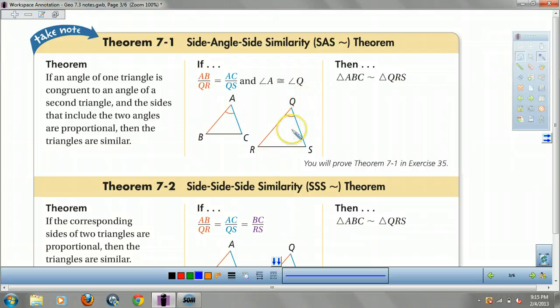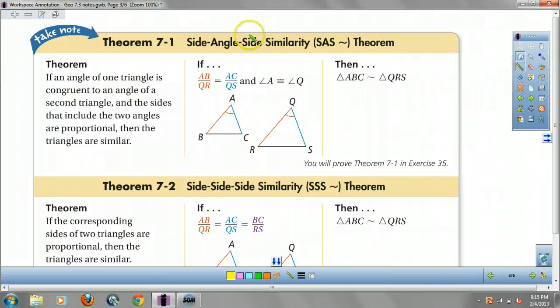Two more theorems coming at you. The first one is side angle side congruence theorem. What that states is if two of your sides are proportional, meaning AB over QR equals AC over QS and the angle in between is congruent, then the two triangles are similar. So, side angle side.